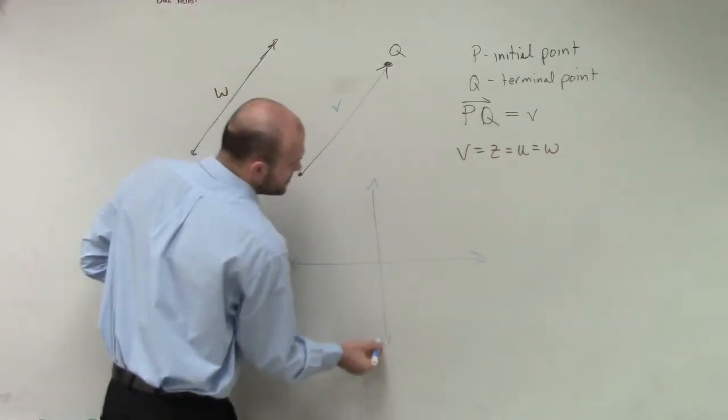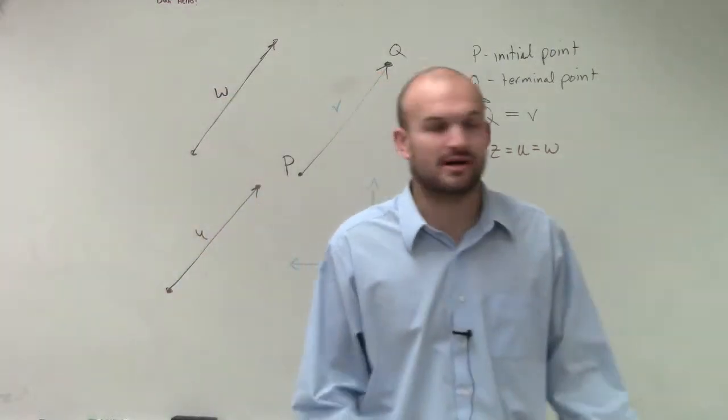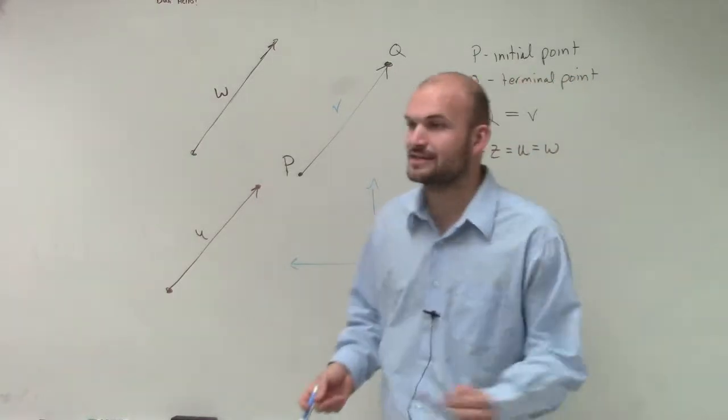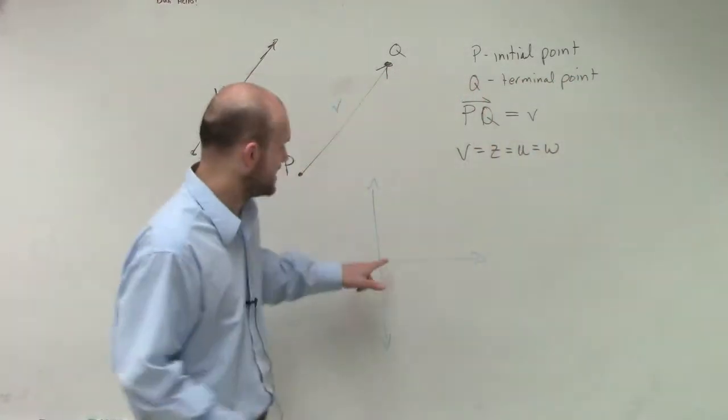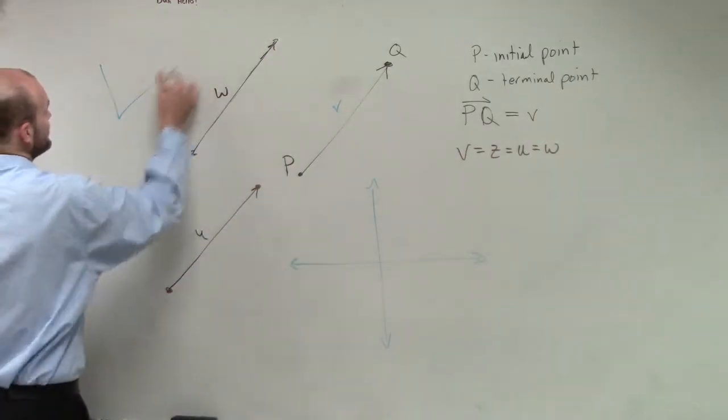Now, you guys remember when we were dealing with angles, we did this exact same formation. We talked about an initial side and a terminal side. And because if we didn't talk about initial sides and terminal sides, and we didn't say your initial side was always on your x-axis, then when we were talking about angles, we could have angles all over the place.